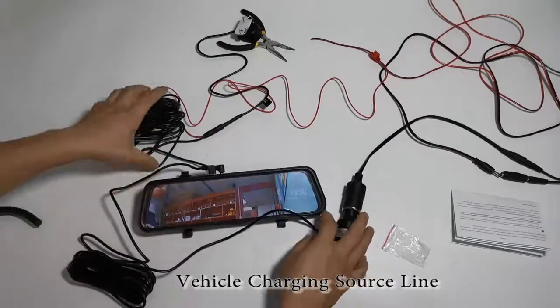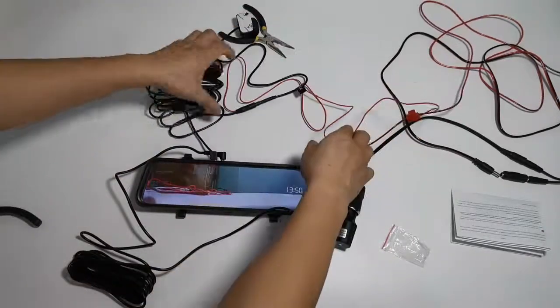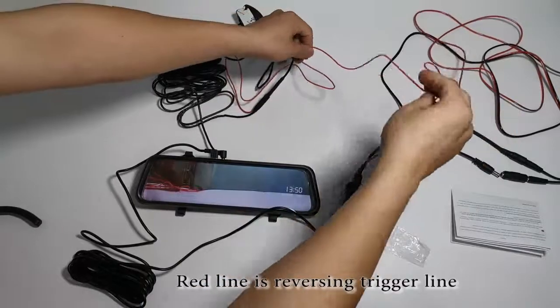Vehicle charging source line. Red line is reversing trigger line.